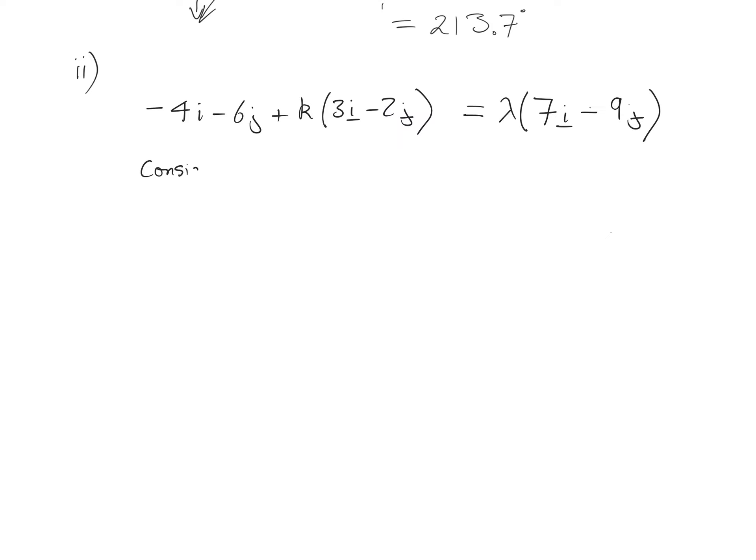We're going to consider the i component first of all. This is now not going to be a vector equation, this is a scalar looking at the coefficient of the i's. So we've got minus 4 plus 3k equals 7 lambda. And we're also going to consider the j component. We've got minus 6 minus 2k equals minus 9 lambda.